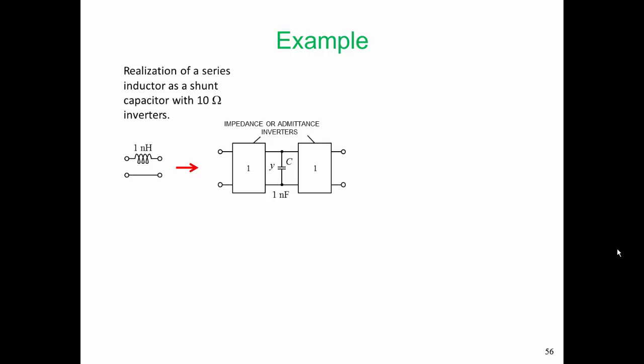As an example, let's say we're going to try and realize a 1 nanohenry series inductor. Well, we know that we can realize that by a shunt capacitor with two unity admittance inverters.